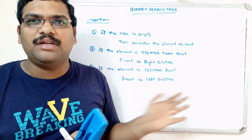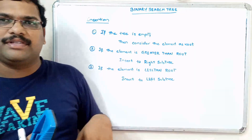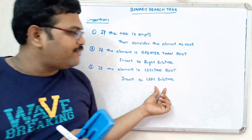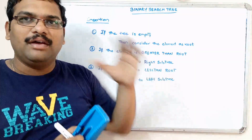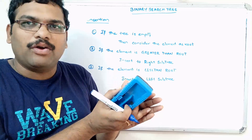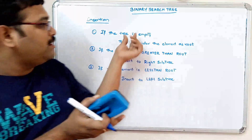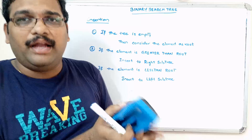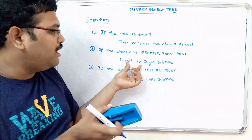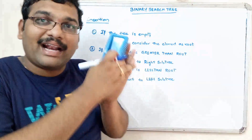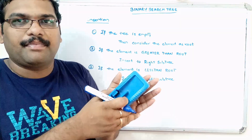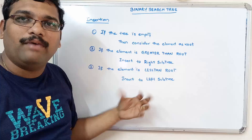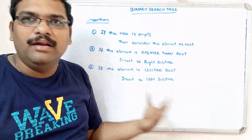We have to follow the same procedure for right subtree and left subtree. While inserting into the left subtree, first find out whether the left subtree is empty or not. If the left subtree is empty, that element becomes the root of the left subtree. If the element is greater than the root of the left subtree, it should be inserted towards the right subtree of the left subtree. The same three steps are followed while inserting any element into the binary search tree.